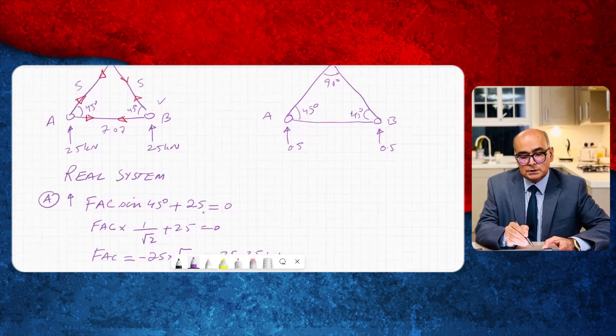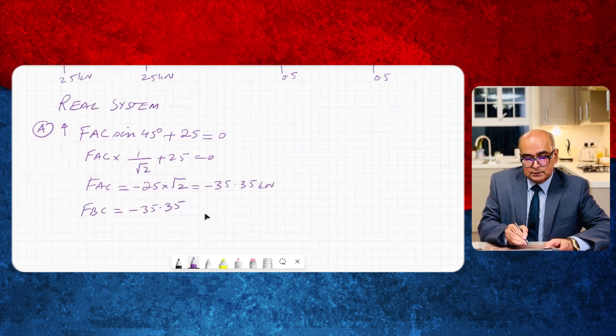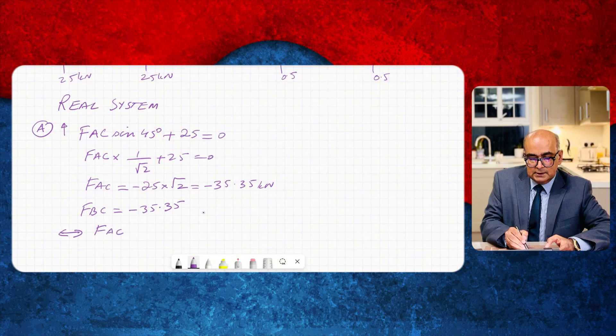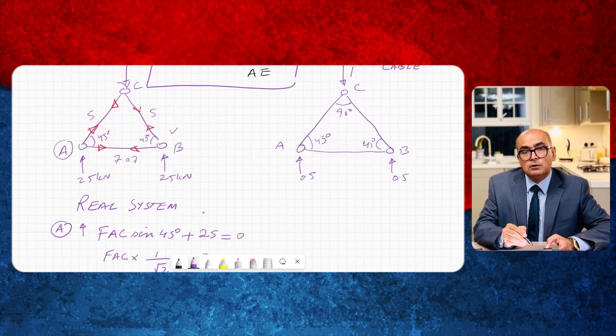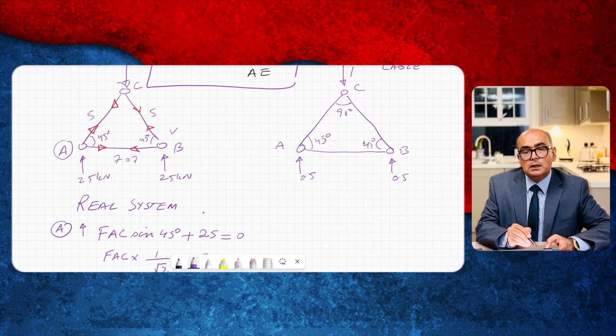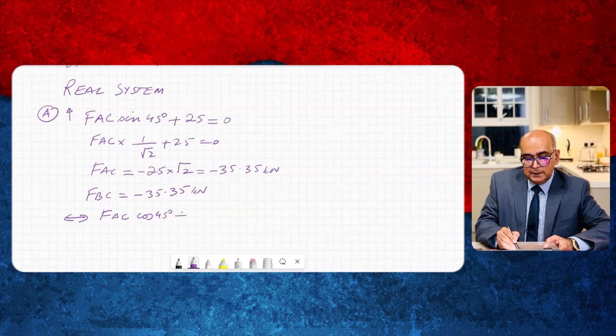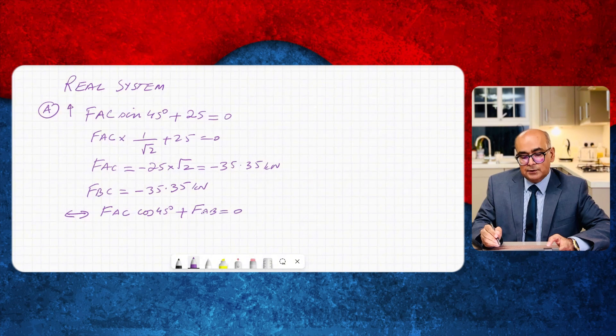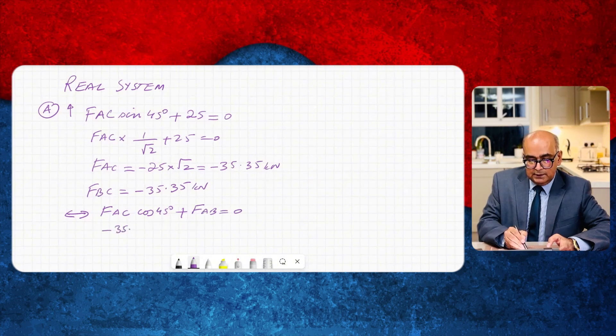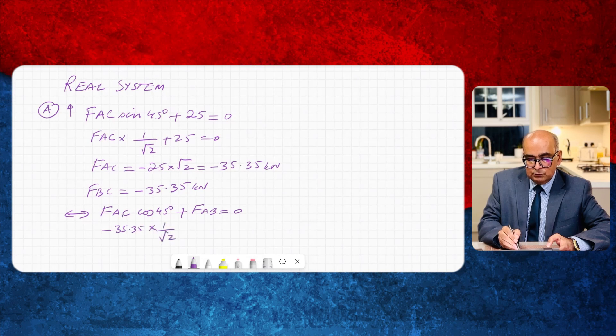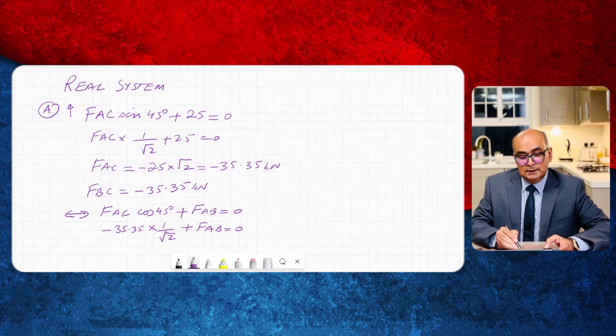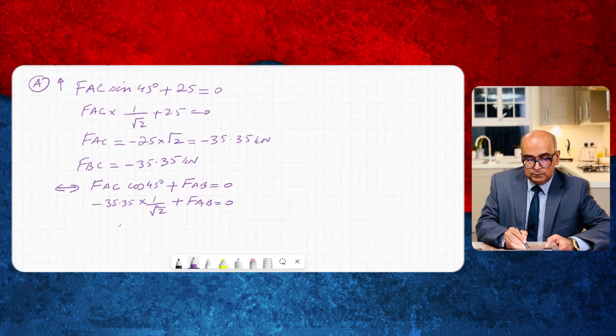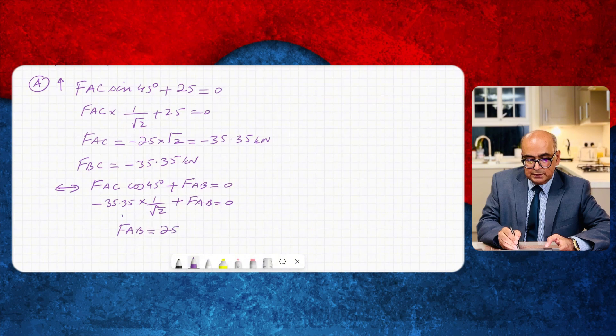Then I will say summation of horizontal forces equal to zero at joint A. So horizontal forces will give me FAC cos 45 degrees. So I have FAC which is here FAC cos 45 and I have FAB as well which is horizontal force in itself. So both of them are pointing rightwards. This is in kilonewton plus FAB is equal to zero. FAC I worked out minus 35.35 into cos is 1 over under root 2 plus FAB is equal to zero. If you divide 35.35 by under root 2 you will get minus 25.